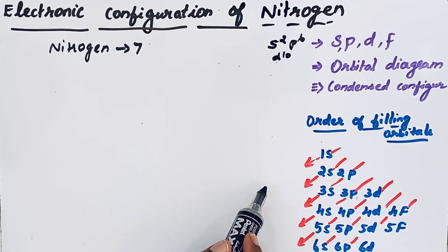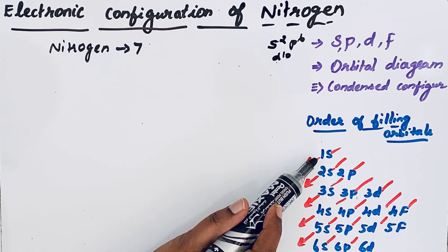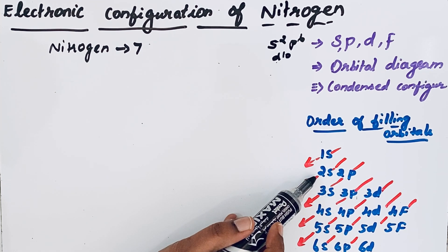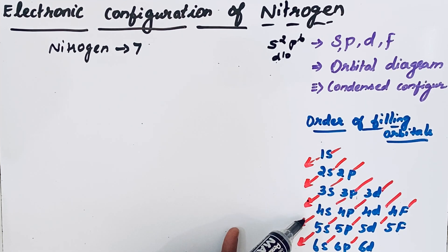Here is the order of filling orbitals. After filling 1s orbital then only we can fill the 2s orbital, then 2p, then 3s, then 3p, then 4s.